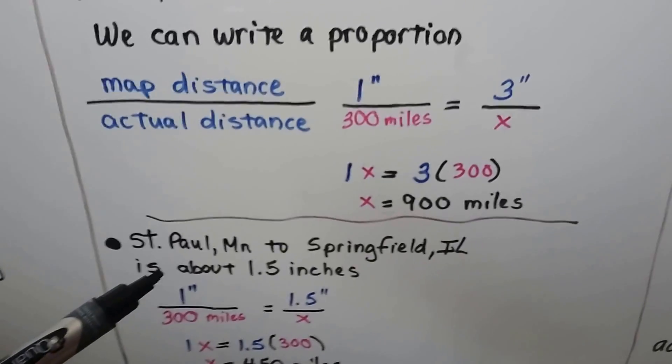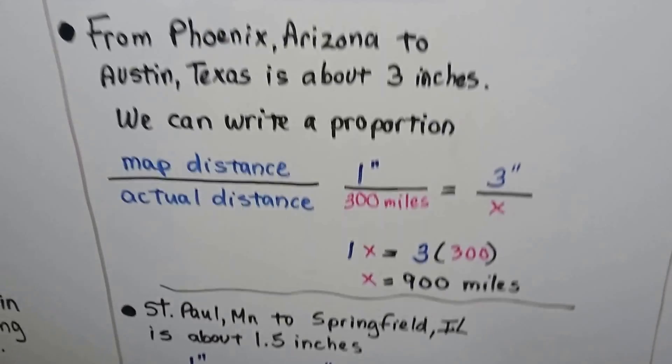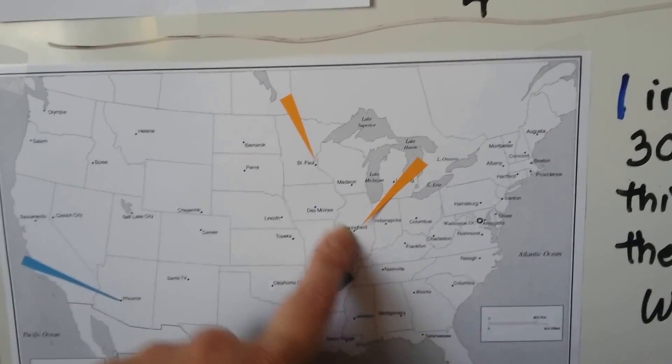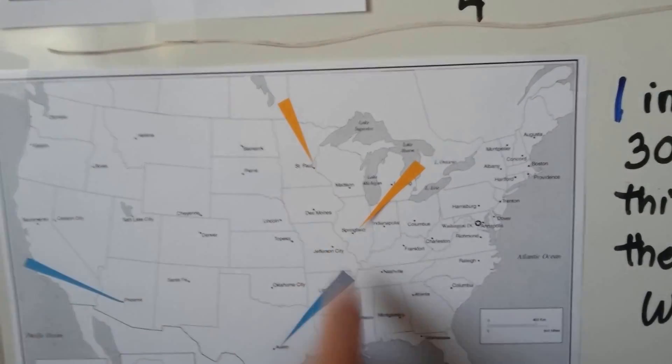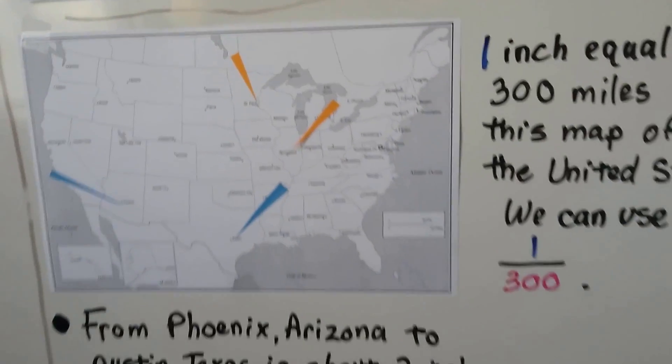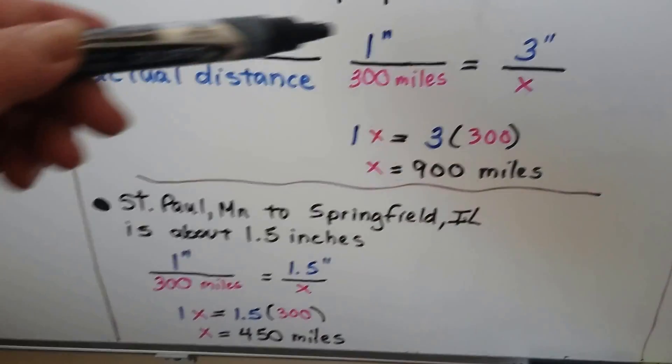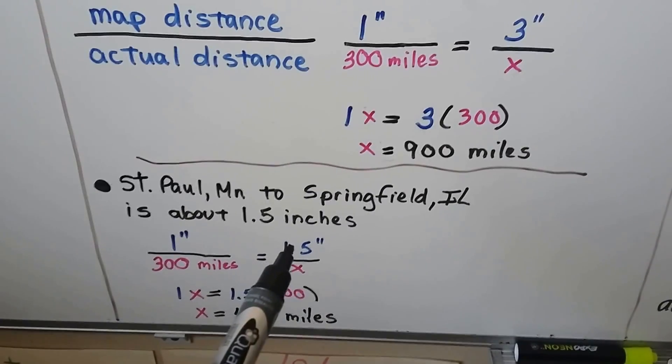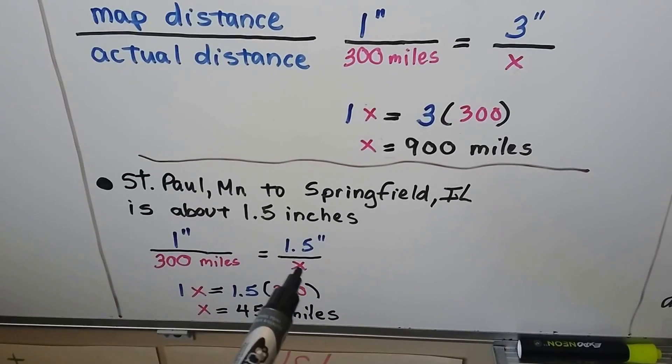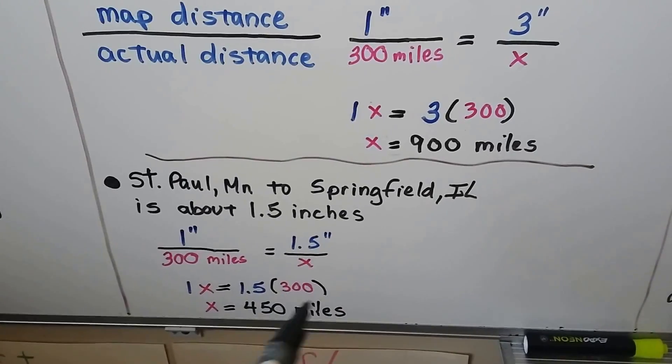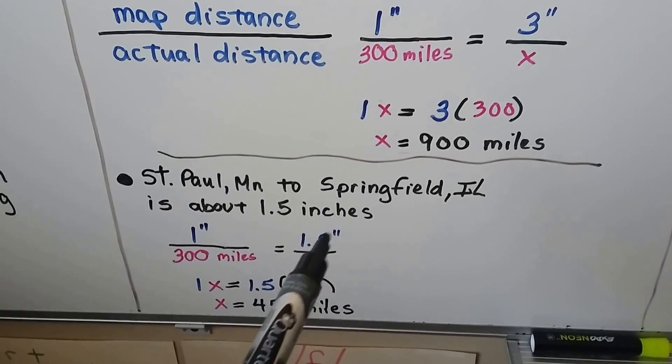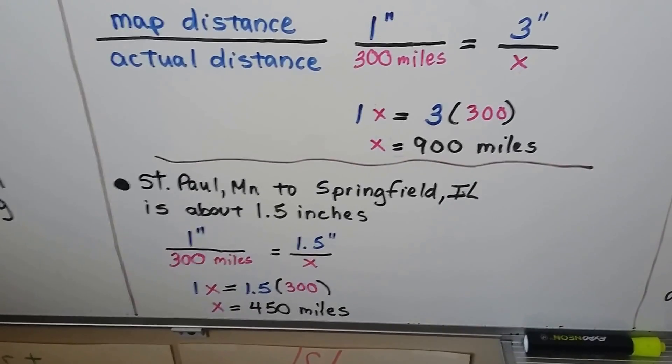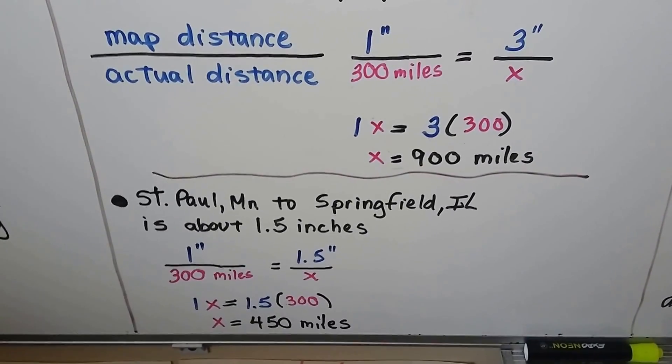Now, St. Paul, Minnesota to Springfield, Illinois is about one point five inches. So here's St. Paul, Minnesota. Here's Springfield, Illinois. And I measured and that's about one point five inches straight across from city to city. So, we use the same one three hundredth fraction. And it's going to equal the one point five inches I measured over however many actual miles it is x. And we cross multiply. We get one x equals one point five times three hundred. And that tells us it's about four hundred and fifty miles from city to city.